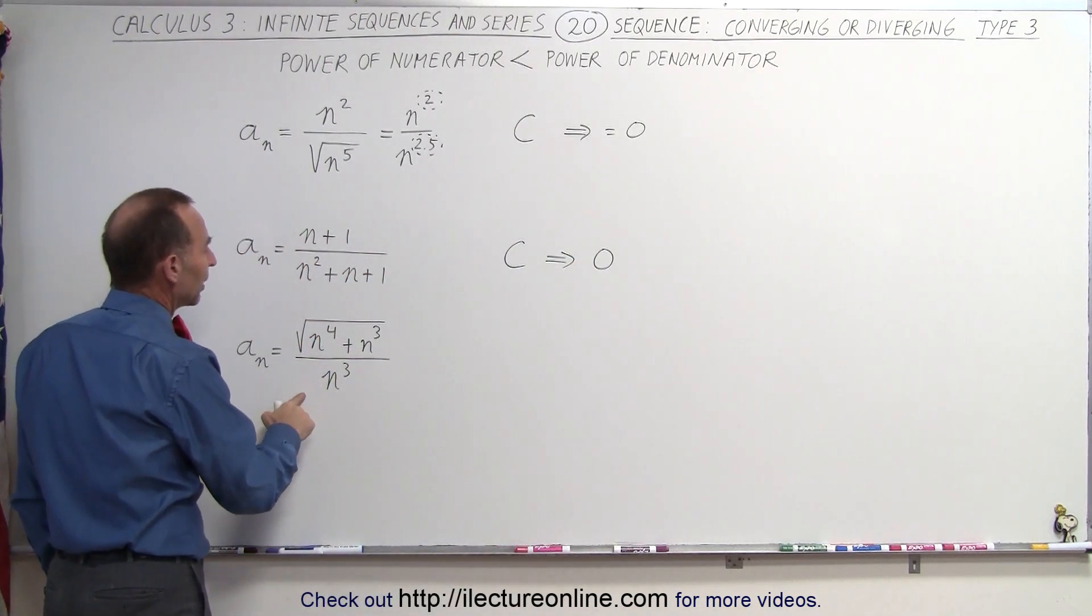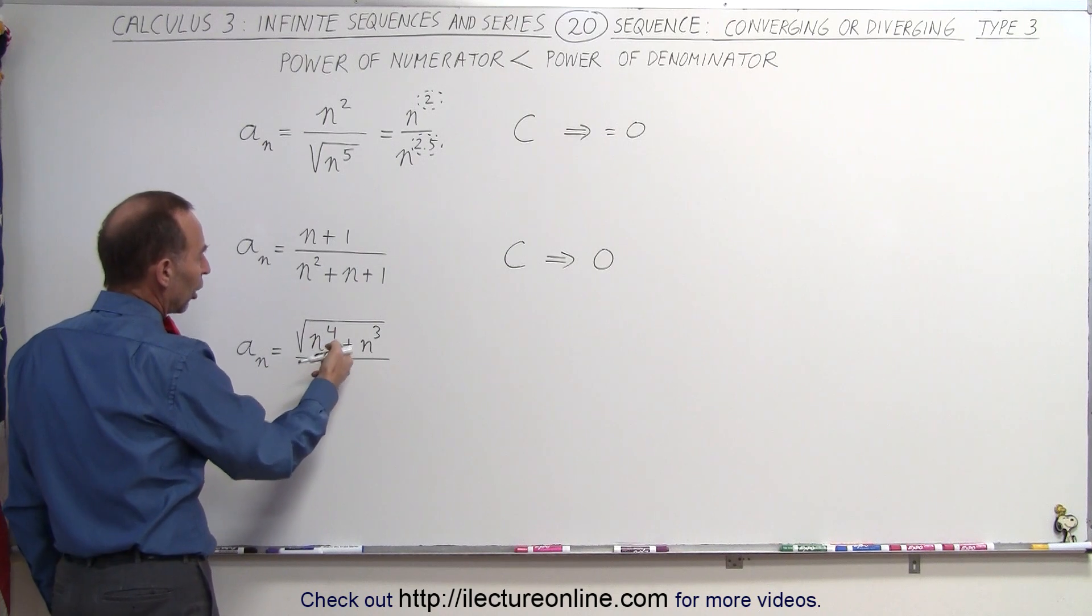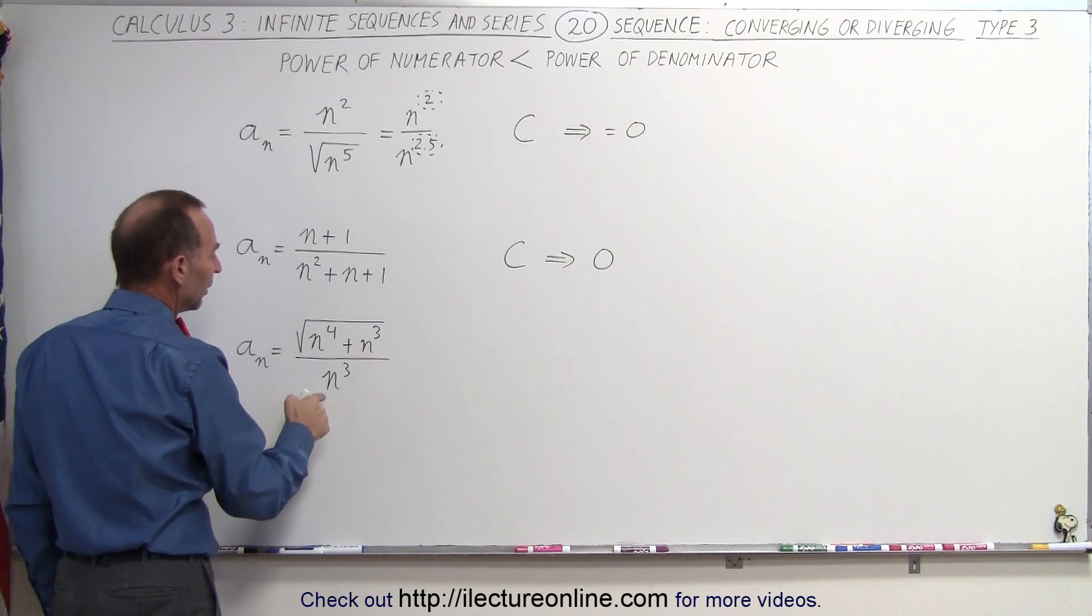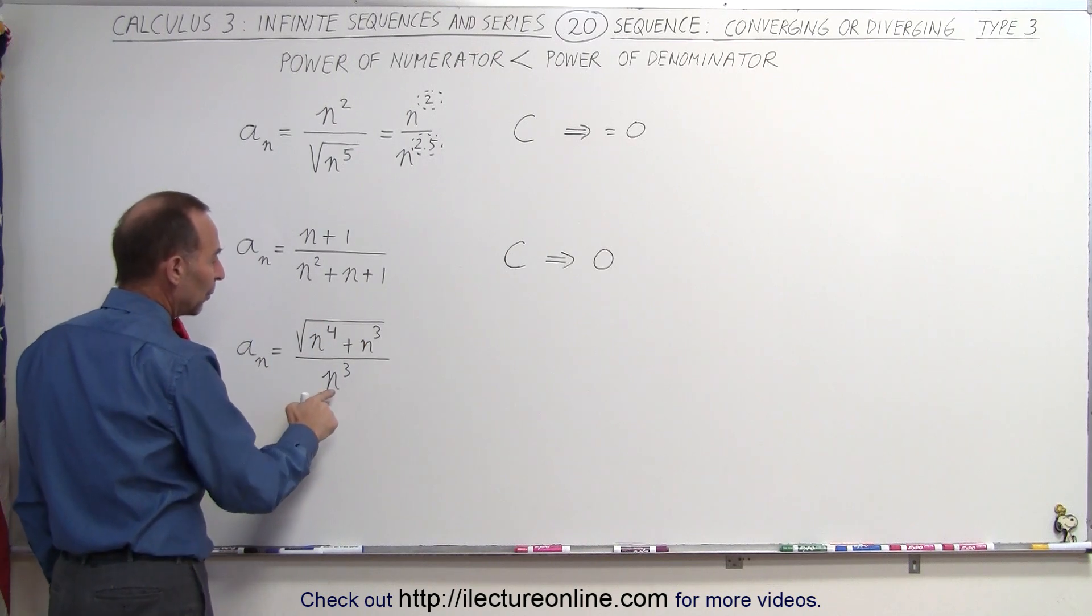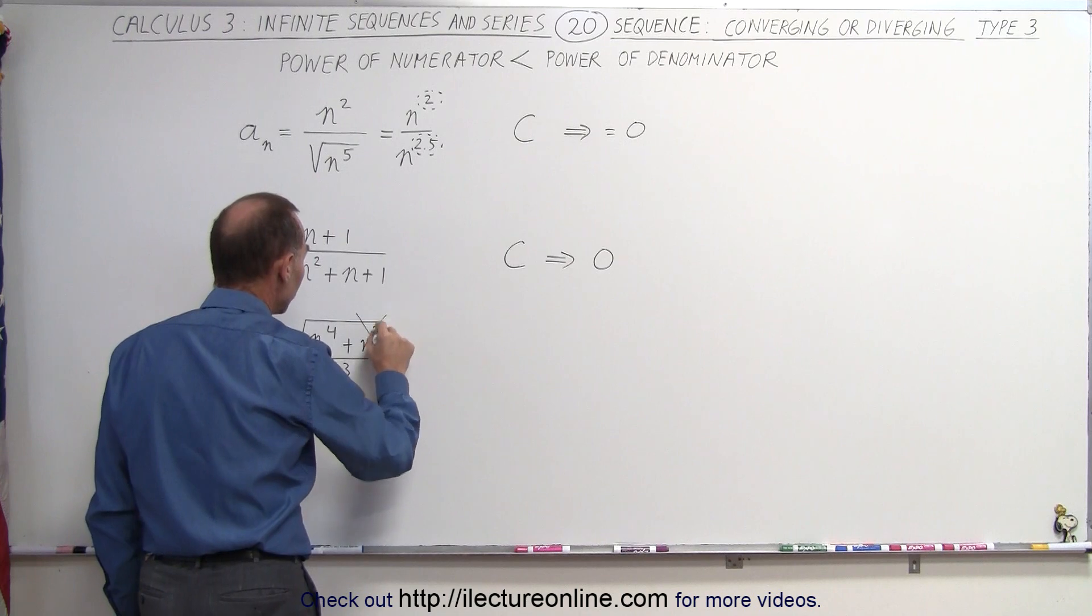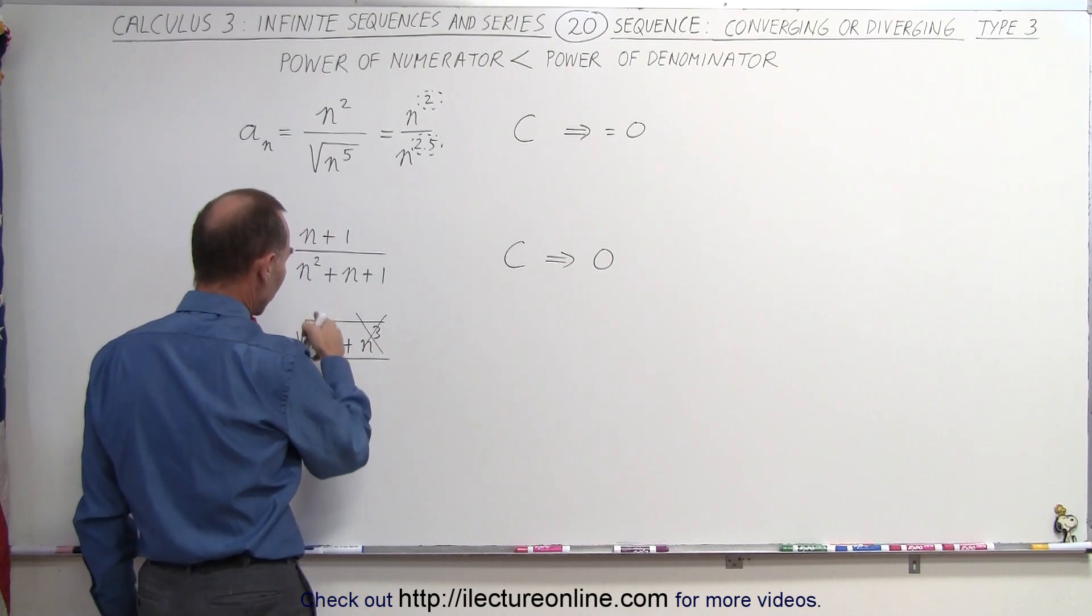And finally, on this example here, notice if we take the largest component in the numerator, n to the fourth power, but it's the square root of that, and then we compare that to n cubed in the denominator. If we ignore this portion right now, and only concentrate on this,